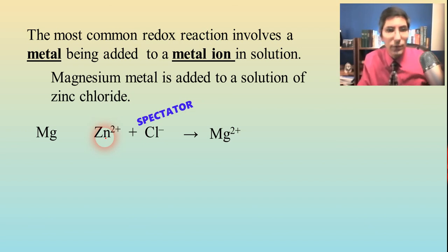And then zinc 2 plus, it's going to be reduced down to usually whatever neutral version of that element is, which is just zinc, Zn. And so here we have something being oxidized. The magnesium is oxidized and the zinc ions end up being reduced.